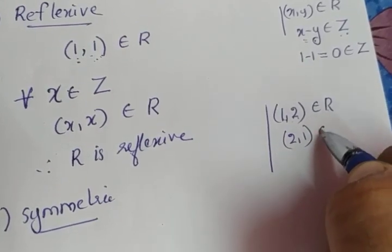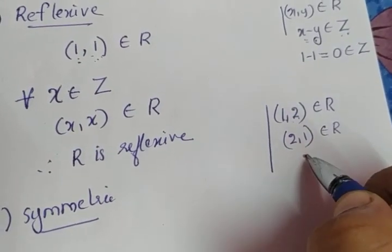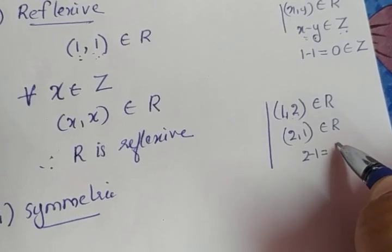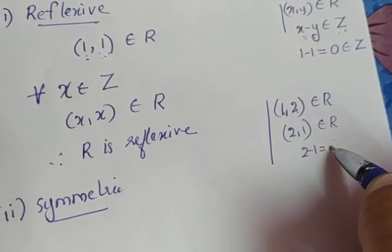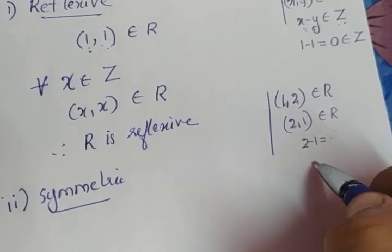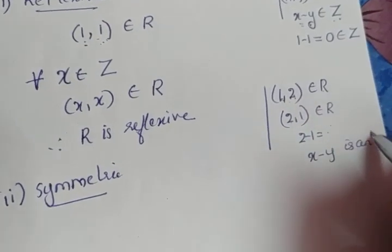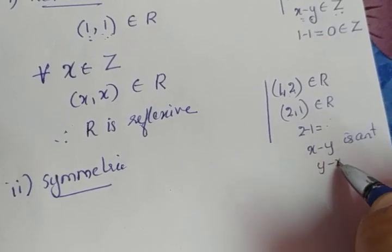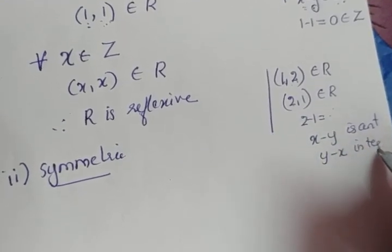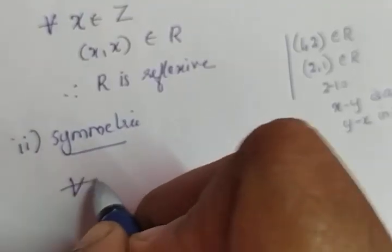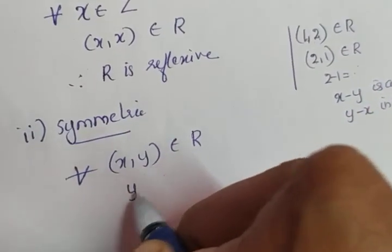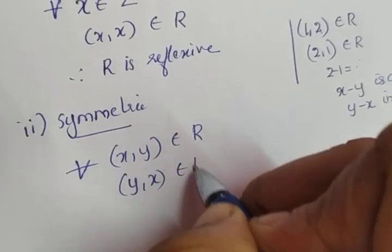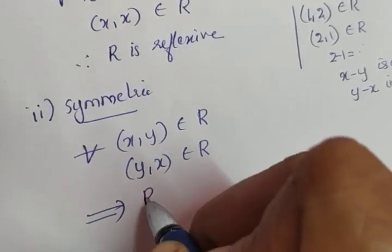(2,1) will also be an element of R. Do you know the reason? 2 minus 1 is also an integer. If one is negative, the other is positive, but still an integer. This happens for all cases. If x minus y is an integer, then y minus x is also an integer. That means for all (x,y) element of R, (y,x) belongs to R, which implies R is symmetric.